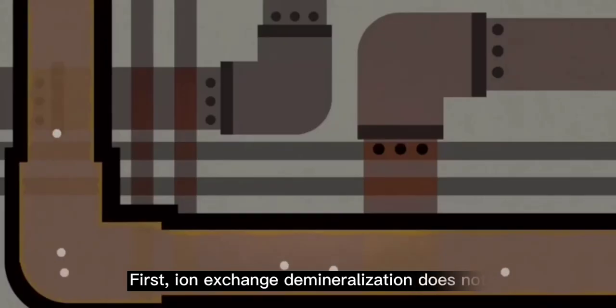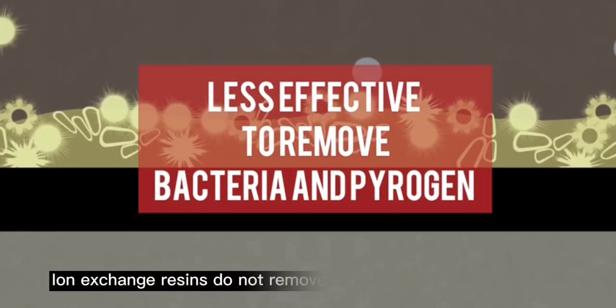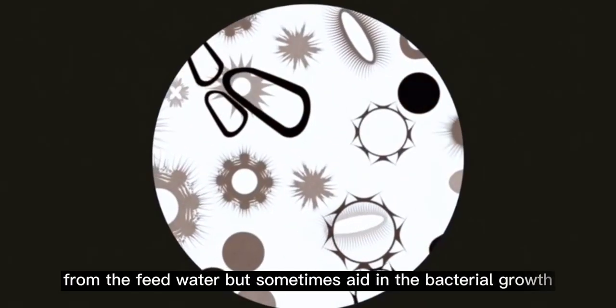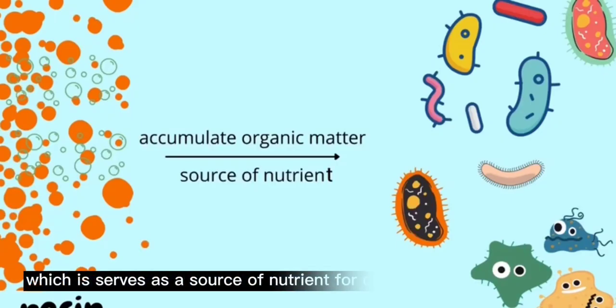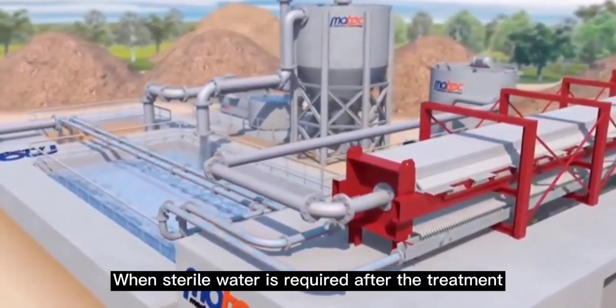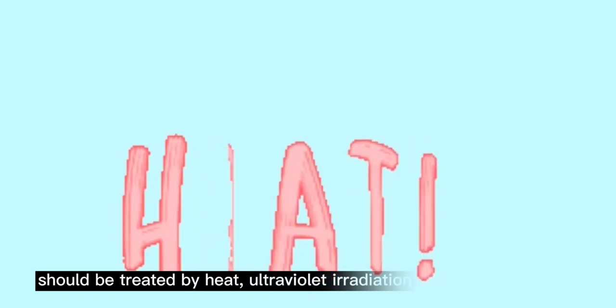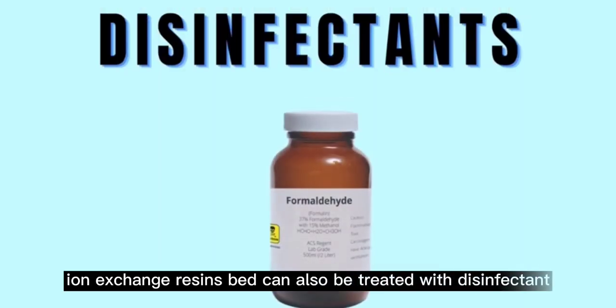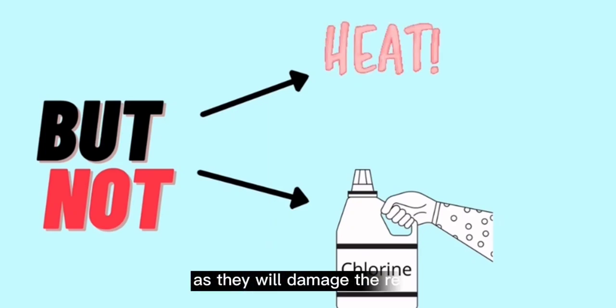Ion exchange demineralization also has its own disadvantages. First, it does not effectively remove bacteria or pyrogen. Ion exchange resins do not remove microorganisms like bacteria from the feed water but sometimes aid in the bacteria's growth. The resin beds may accumulate organic matter, which serves as a source of nutrients for continued growth of bacteria. When sterile water is required after treatment, the demineralized water should be treated by heat, ultraviolet irradiation, or very fine filtration. Ion exchange resin beds can also be treated with disinfectants such as formaldehyde but not with heat or chlorine, as they will damage the resin.